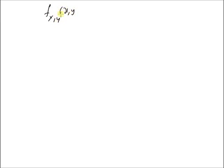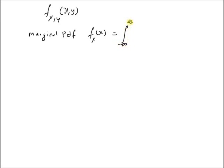Given the joint PDF f_{x,y}(x, y), we want to define the marginal PDF f_x(x) as the integral from minus infinity to plus infinity of the joint PDF f_{x,y}(x, y) over the other variable y. This is the definition of marginal PDF.